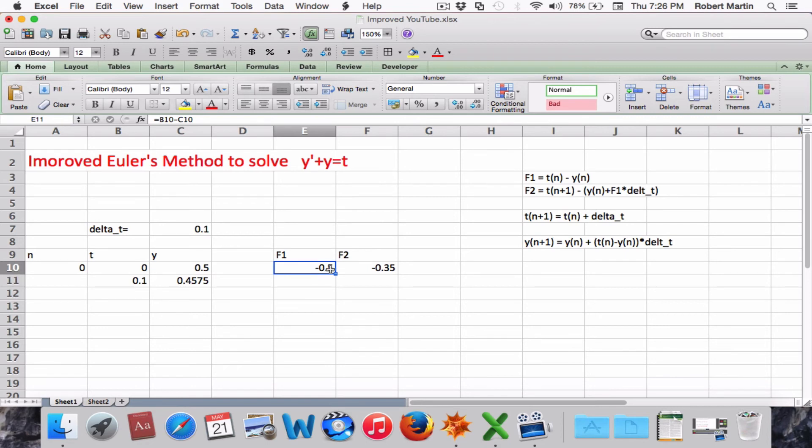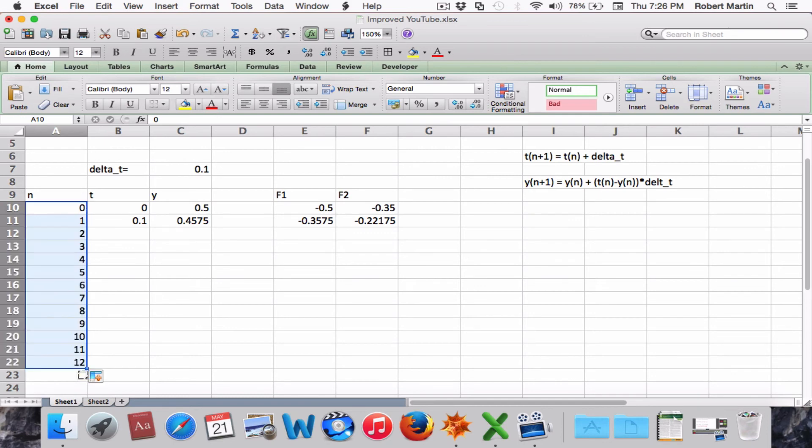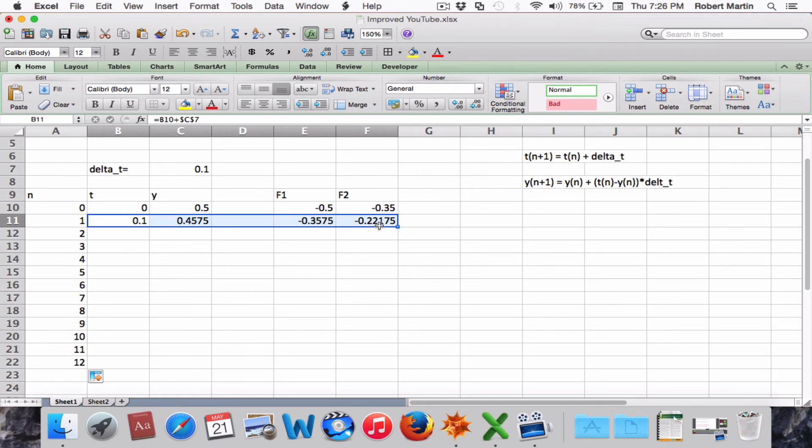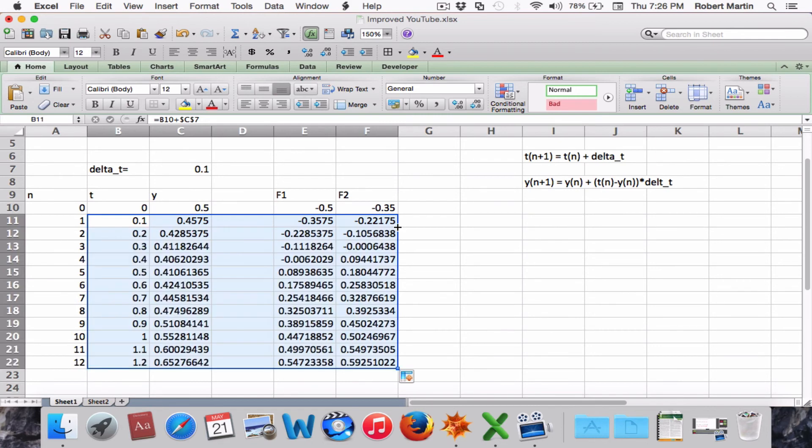Next, what we do is we go over to F1 and F2 and pull down to update the next two values. Now since we're going to be evaluating the results on the interval 0 to 1.2, we will require 12 iterations. Now to iterate these formulas for N going from 1 up to 12, we just select this row here and we can double-click and it will update.